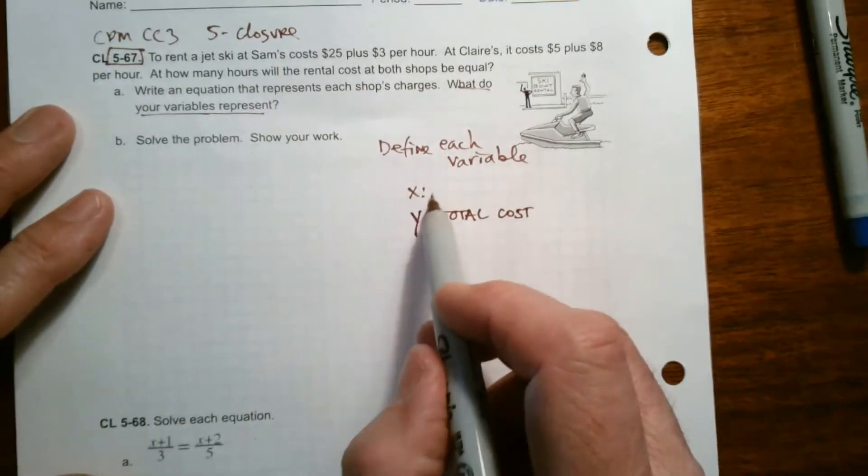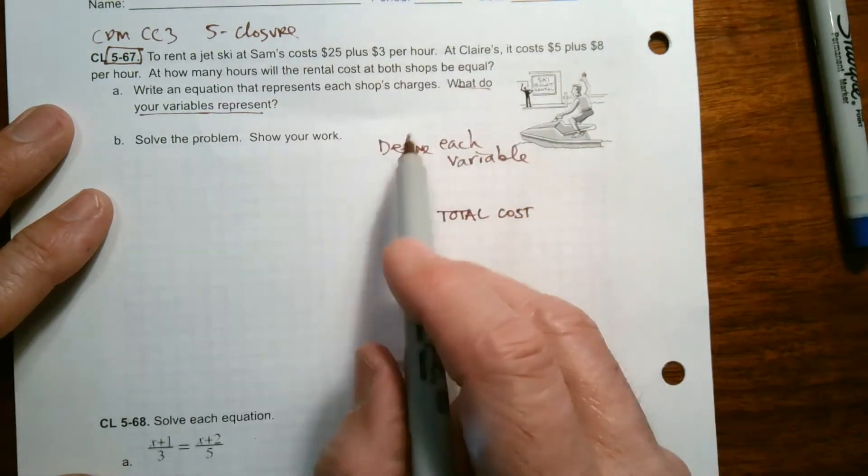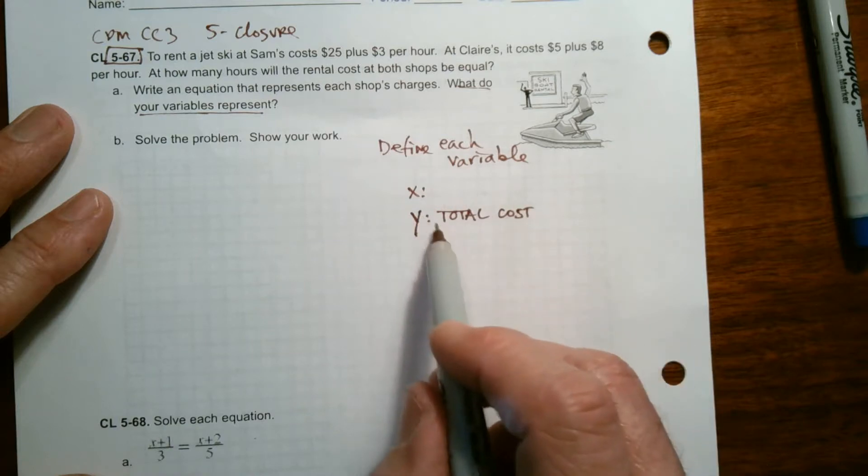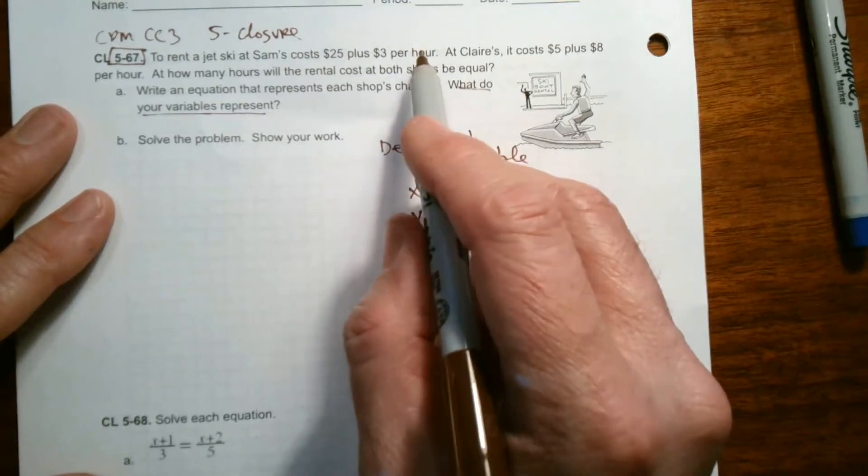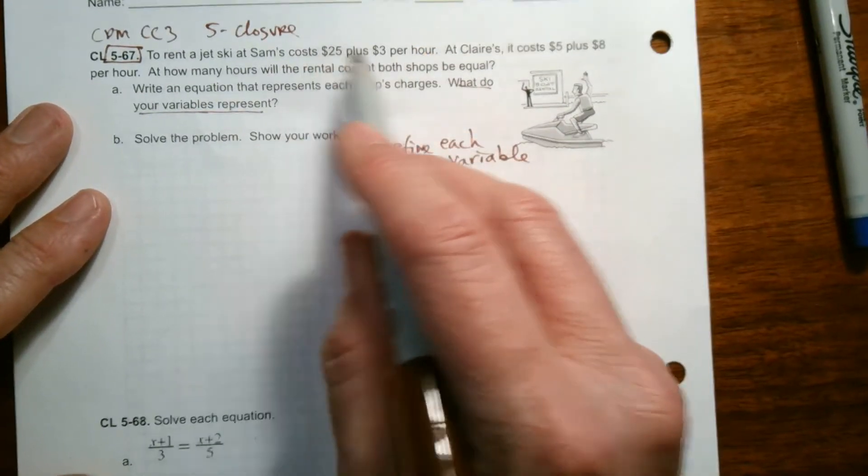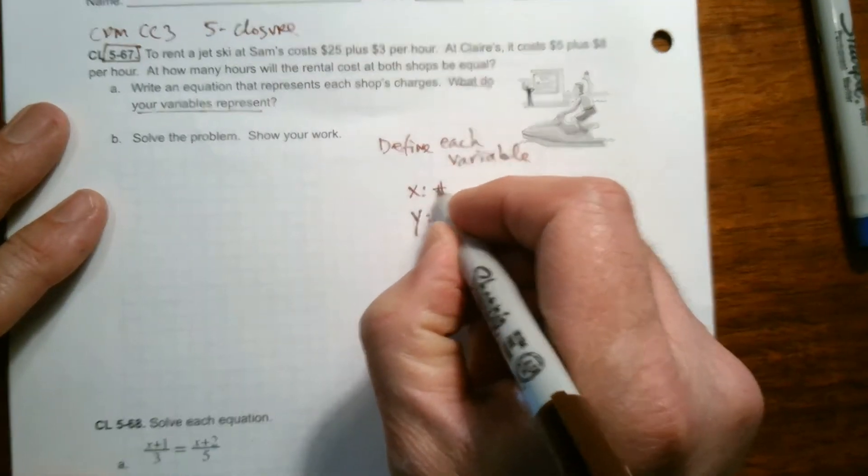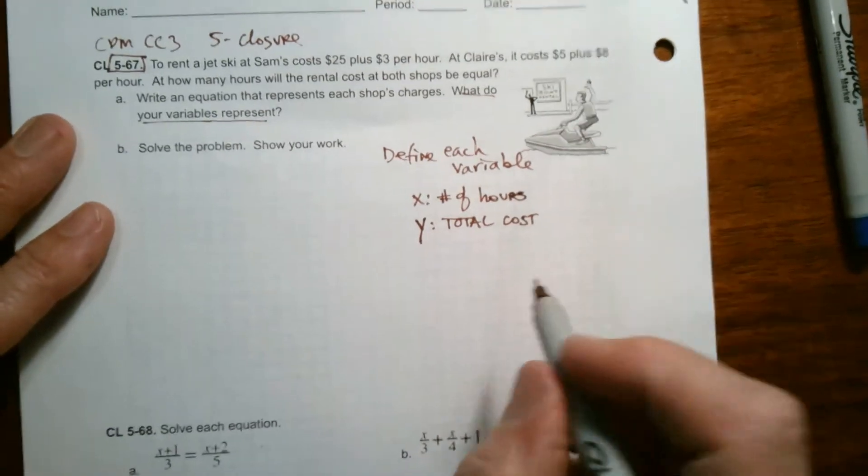So then what is the X? Well, what's the dependent or the independent variable? Like what's going to make everything change? What makes the total cost change? What would give me different total costs would be each hour. If I had four hours, five hours, six hours, seven hours, that's going to change the total cost. So X represents the number of hours.